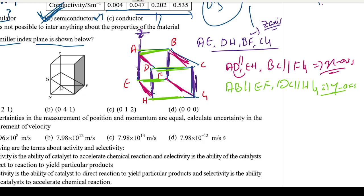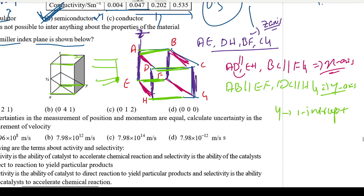Now let's check intercepts. For the X axis — is there any intercept? Yes, on this side, the intercept is 1. So we consider 1 for X. For the Y axis, the intercept on this plane is also 1 — one is the intercept for Y. Now for the Z axis, looking at the top — it is off, meaning the Z axis intercept is infinity.